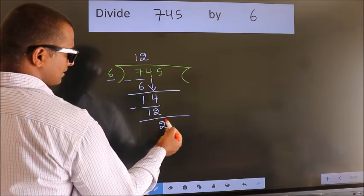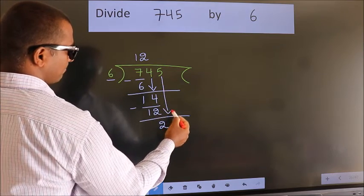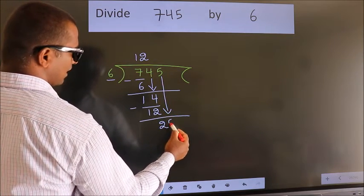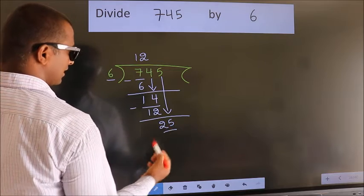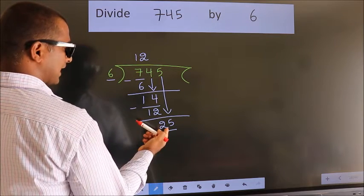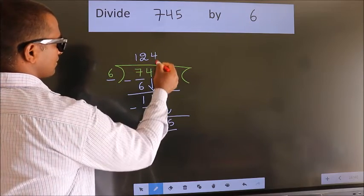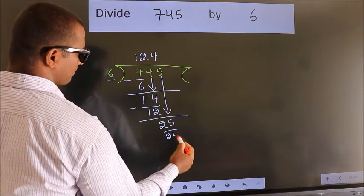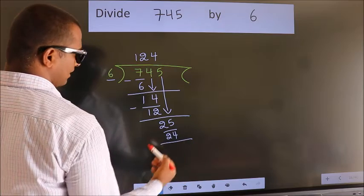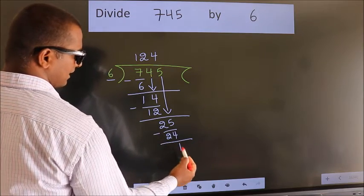After this, bring down the beside number. So, 5 down. So, 25. A number close to 25 in the 6 table is 6 fours, 24. Now, we subtract, we get 1.